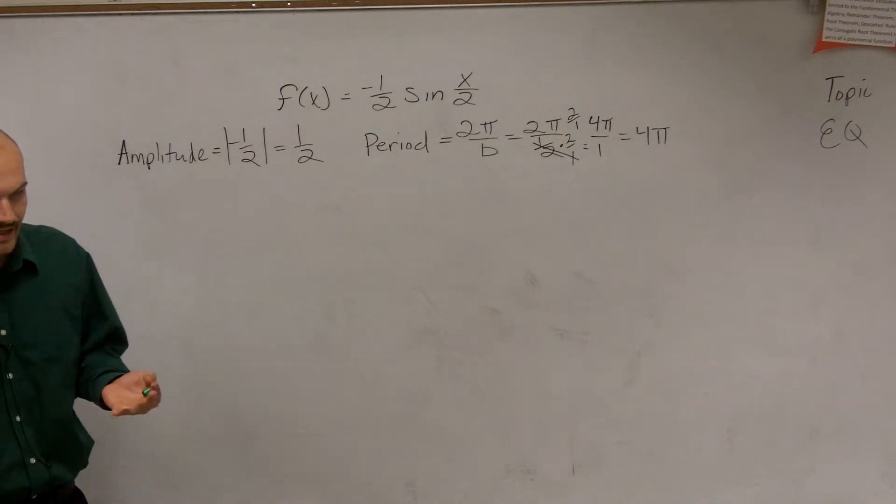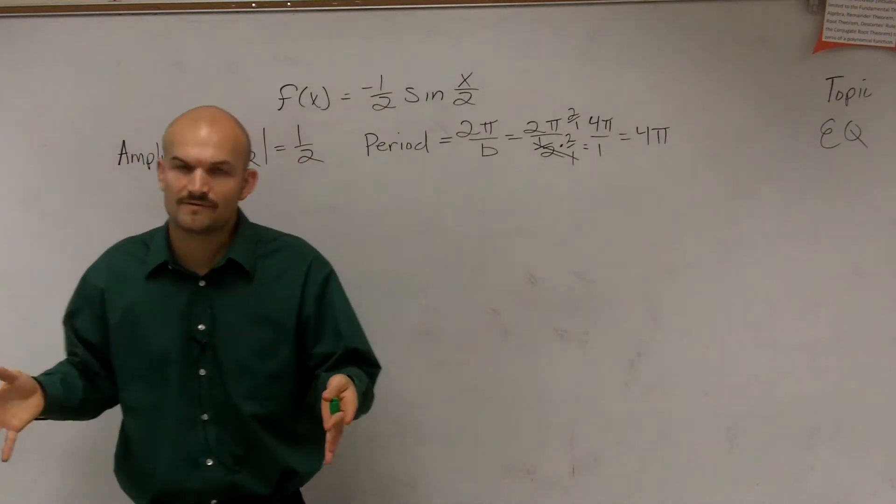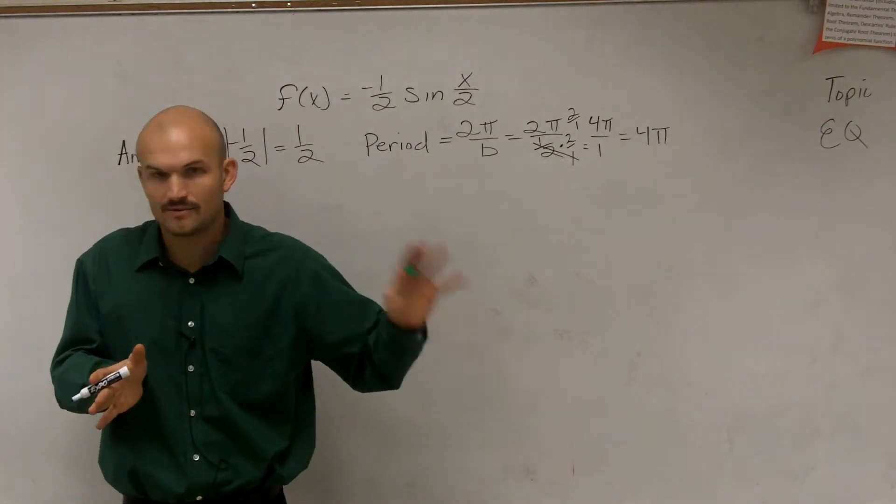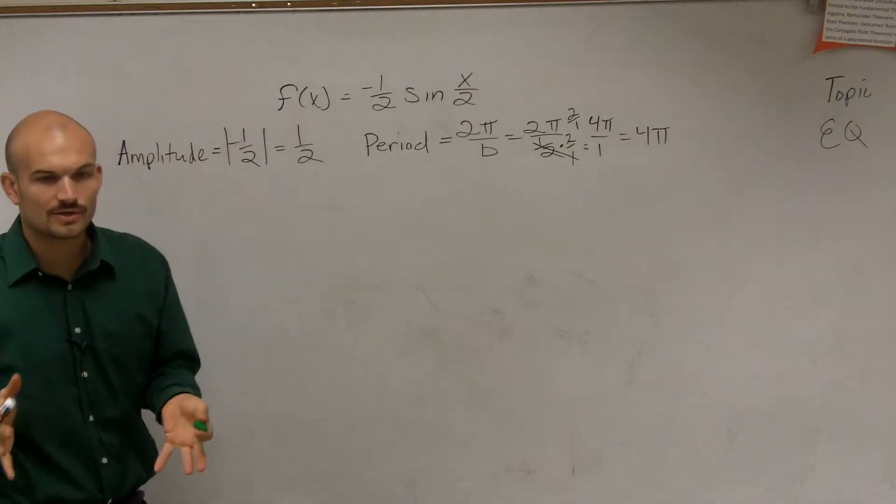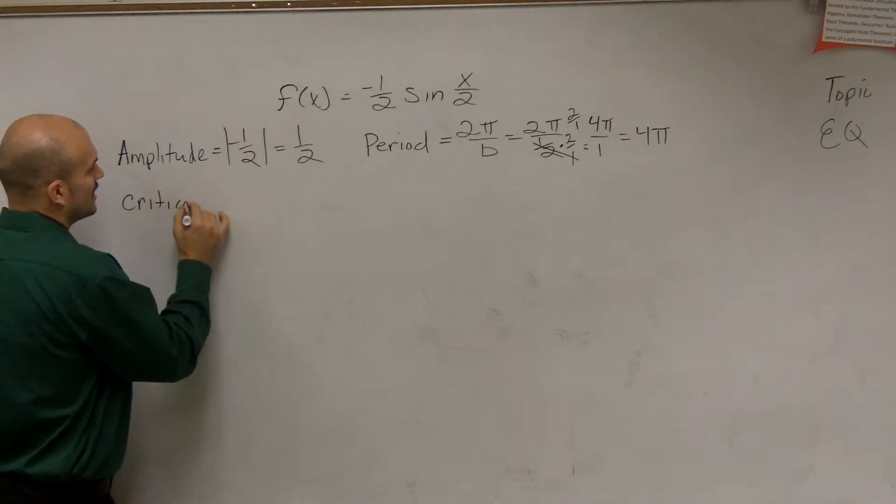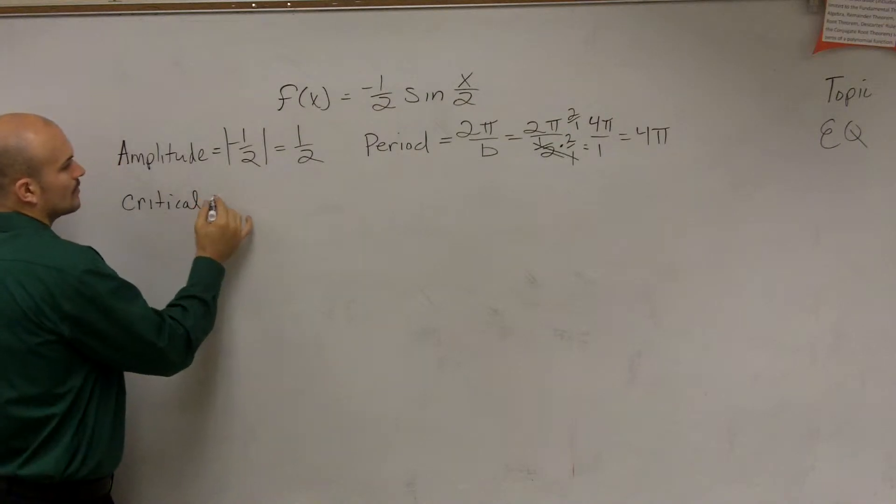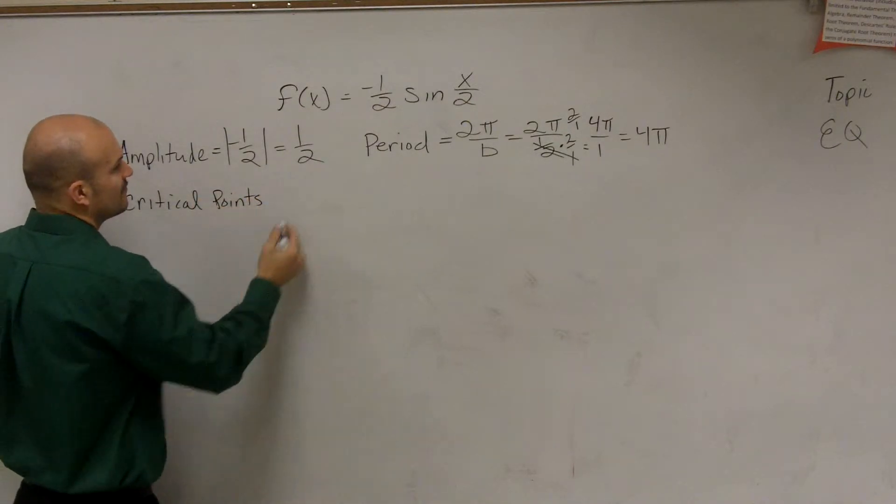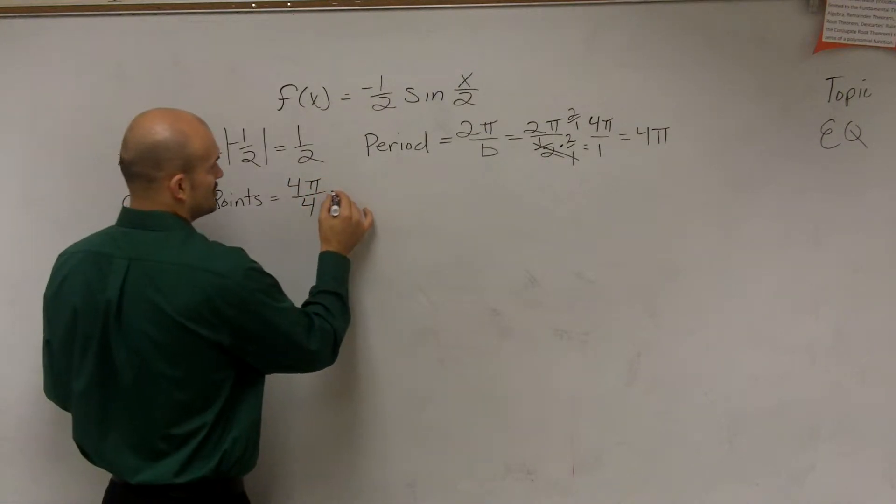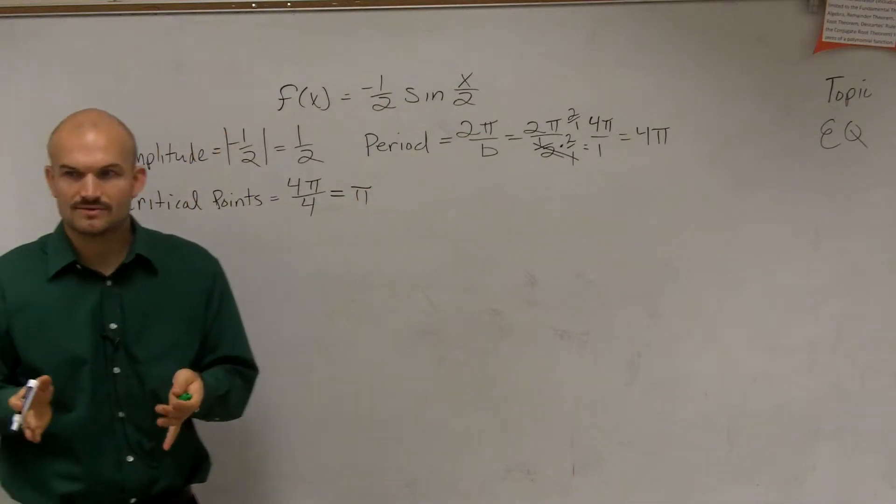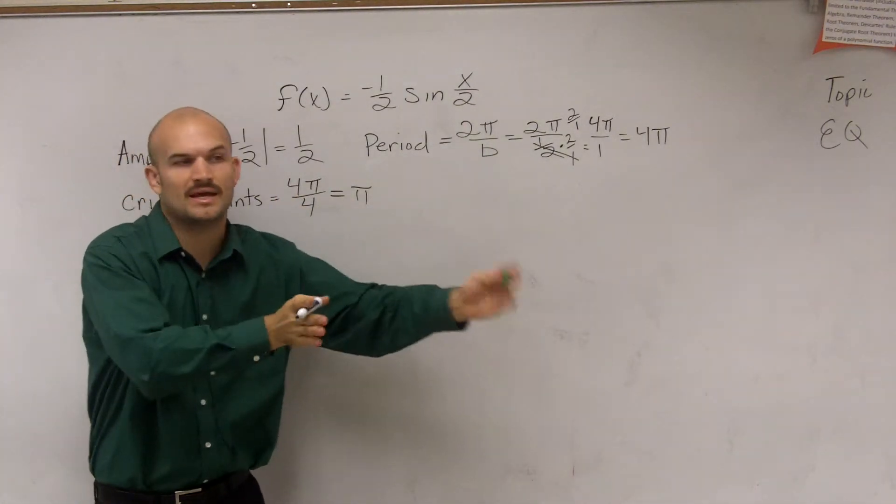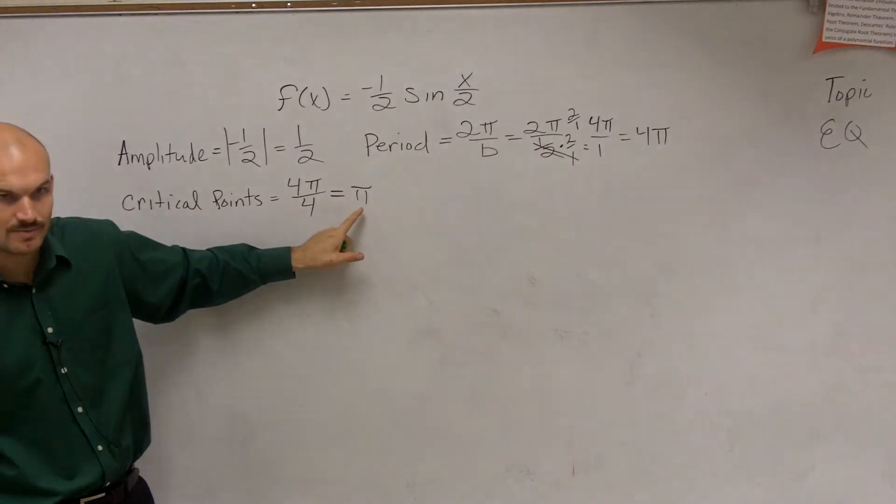The next thing that I want to look at is I want to look at my critical points. If you guys remember, when we were graphing, I talked about critical points of a graph. We had a max, we had a min, we had all these x-intercepts. We talked about four critical points. Well, to determine the critical points, or at least the distance between the critical points, what we're going to do is you're going to take your period and divide it by 4. So I'm just going to do 4π divided by 4. So what that tells me now is the distance between my critical points. The first one is being my x-intercept. And then I have a max, and then I have an x-intercept, then I have a min. The distance between each critical point is going to be π.